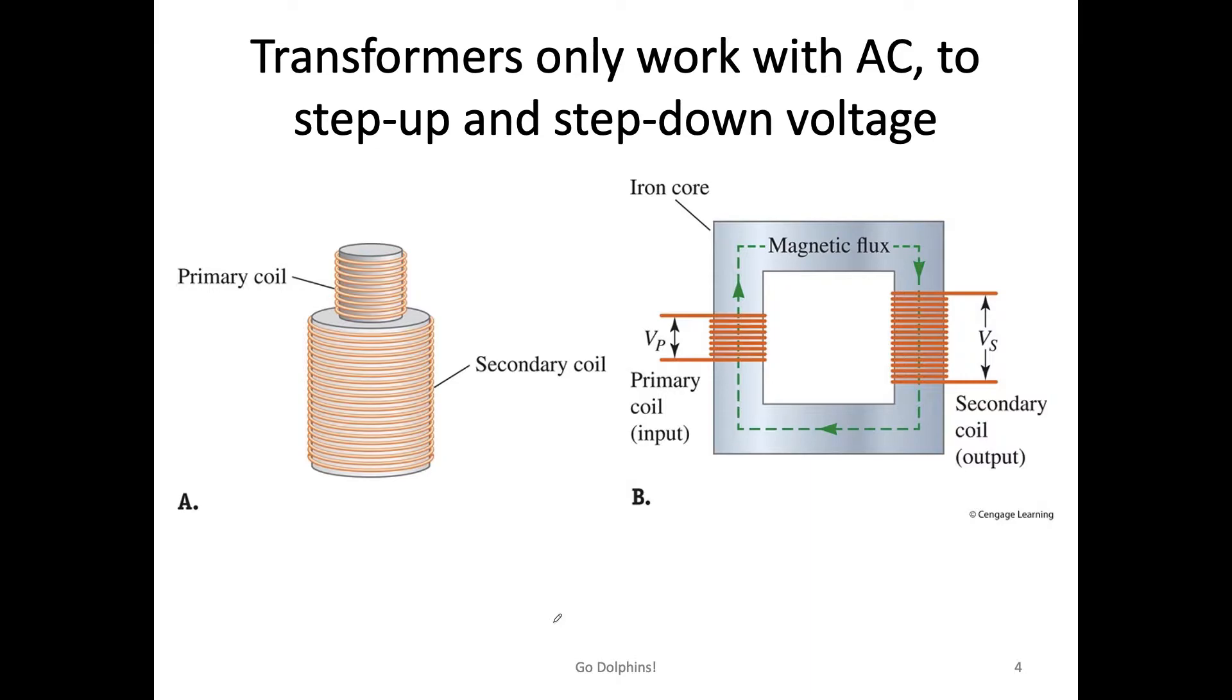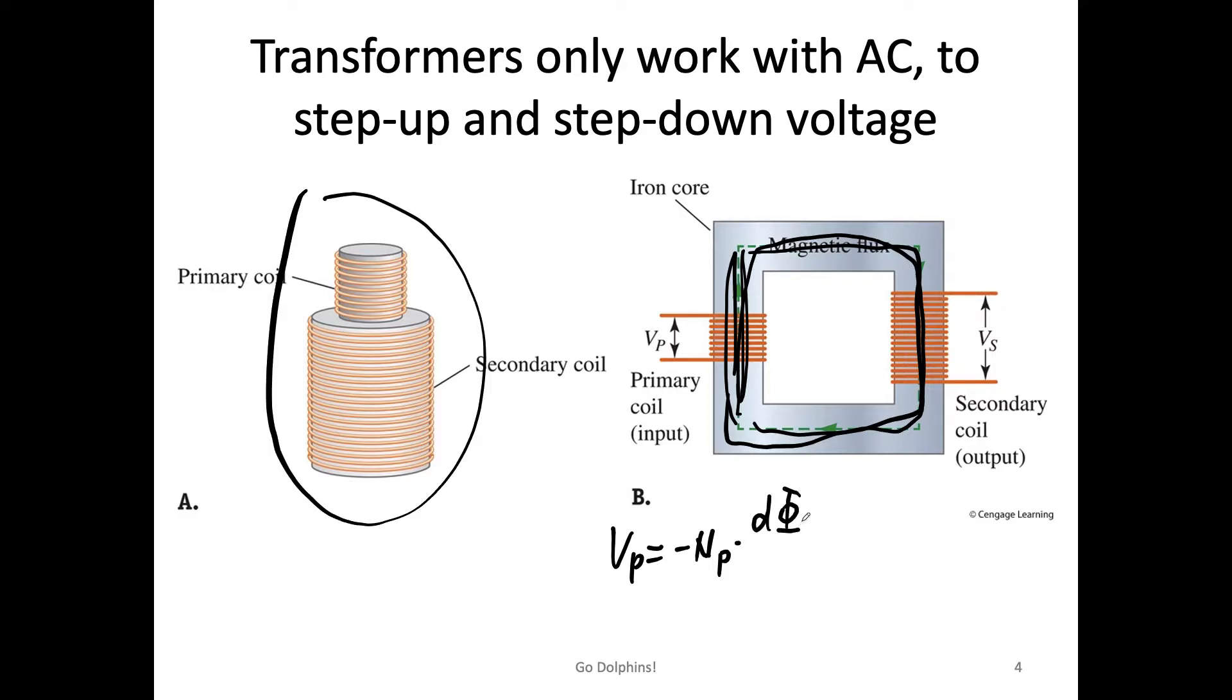So you can construct a transformer in such a way that the secondary coil and the primary coil will have the same magnetic flux, or they can connect it by a metal. The magnetic flux is exactly the same through this metal. And then we have V_P should be equal to N_P dΦ_B/dt, and V_S is negative N_S dΦ_B/dt.